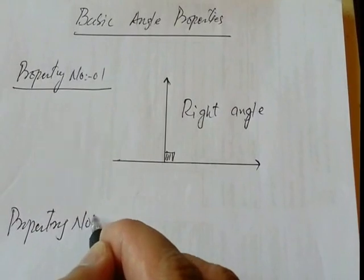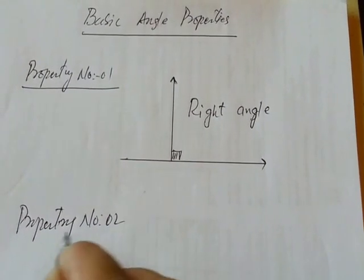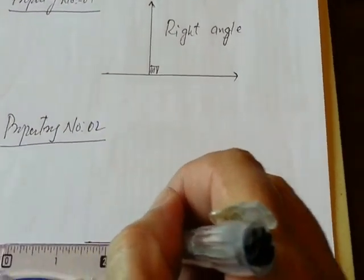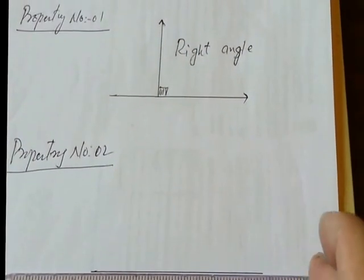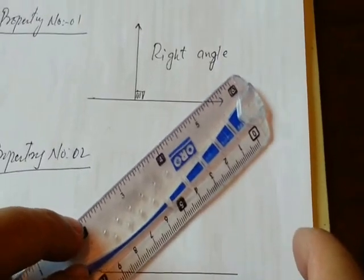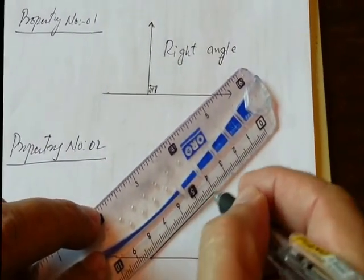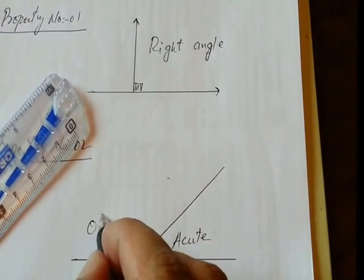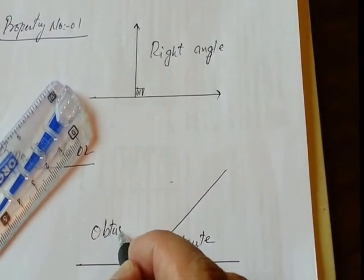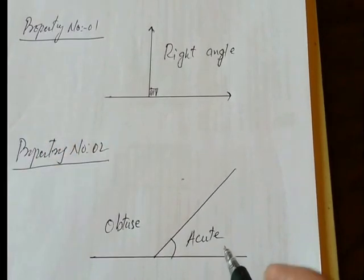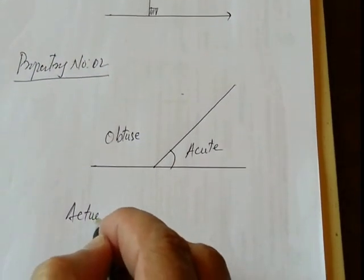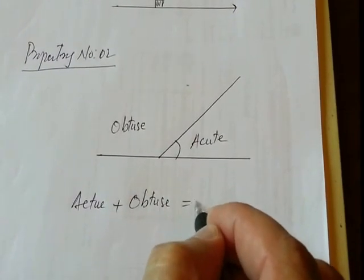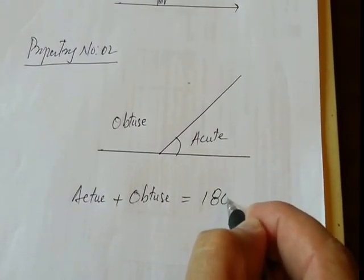Property 2: If there are two angles on a straight line — one is Acute and the other is Obtuse — the sum of these two angles, Acute plus Obtuse, will be 180 degrees.